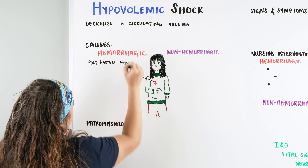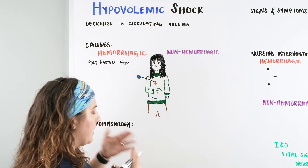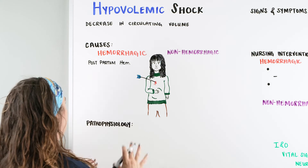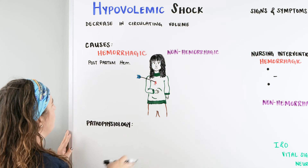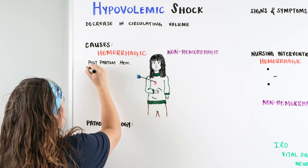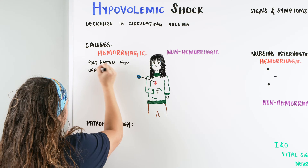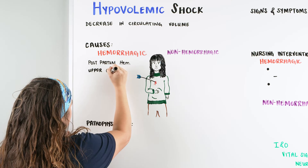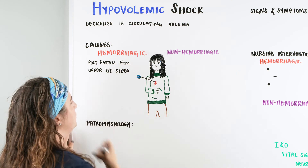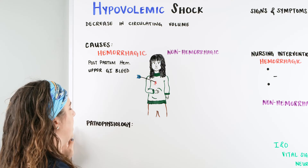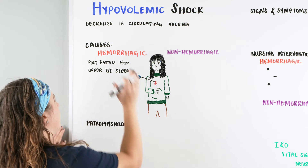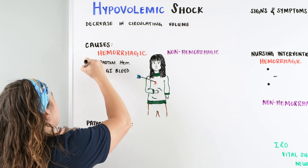A patient goes in to have their baby, and then all of a sudden some complications occur. It's one of the more common things with pregnancy — when you go to give birth, you can have postpartum hemorrhage. Another one is our upper GI bleed. A patient that maybe has esophageal varices or peptic ulcer disease is prone to possibly having a hemorrhagic episode.